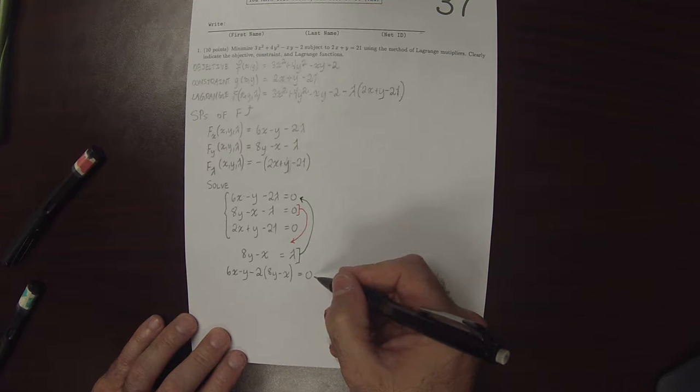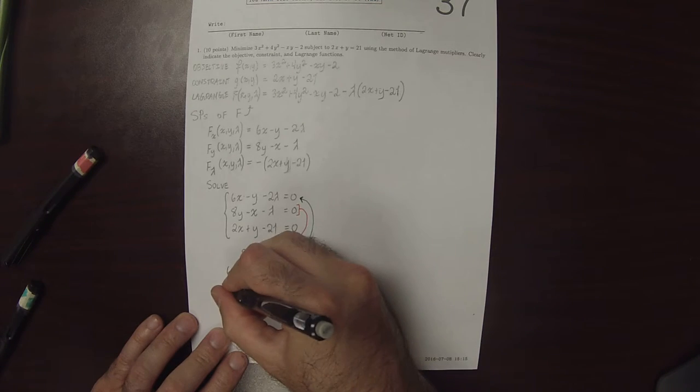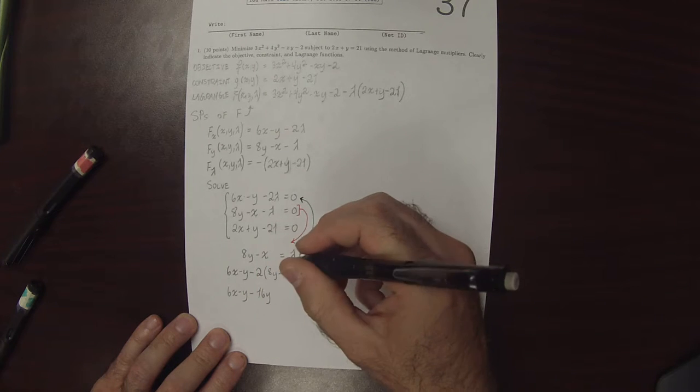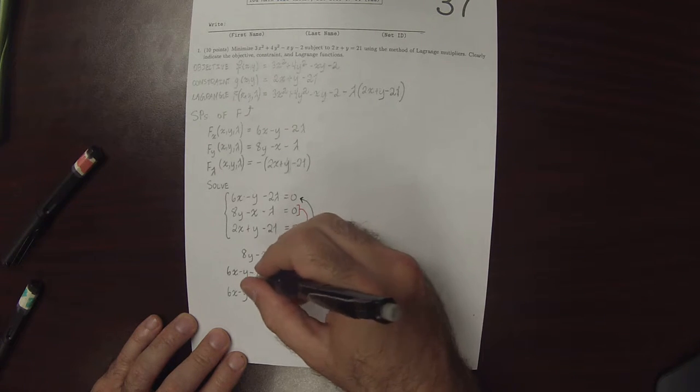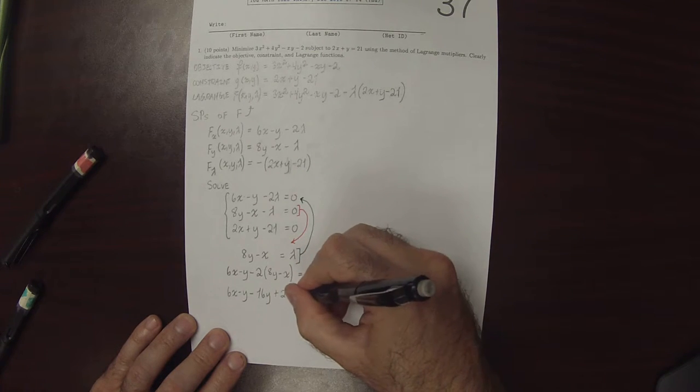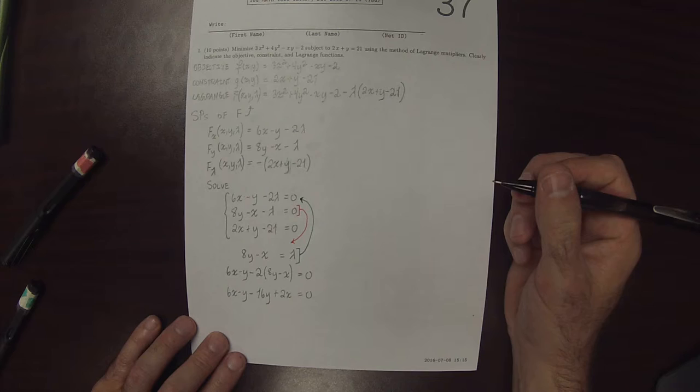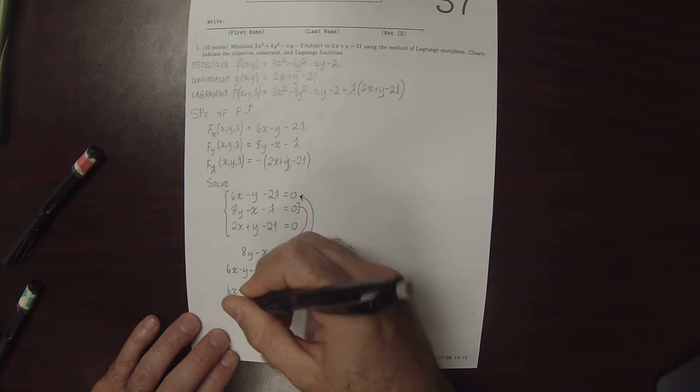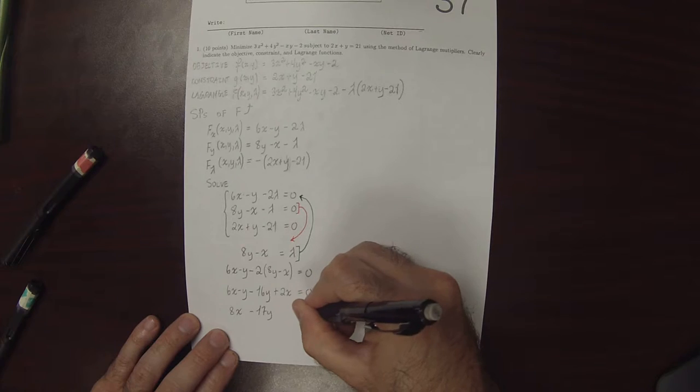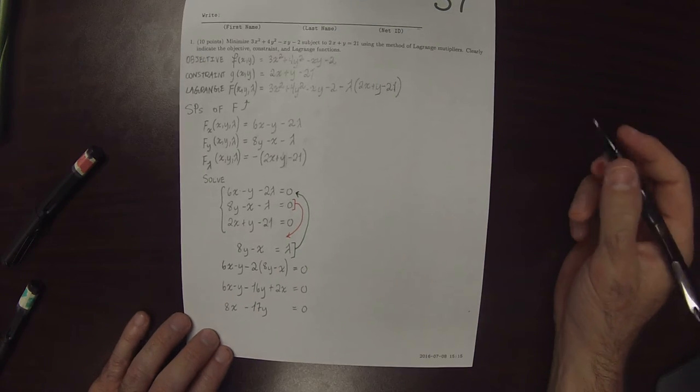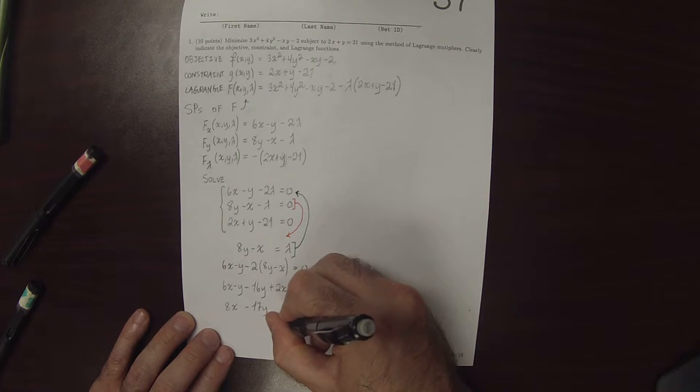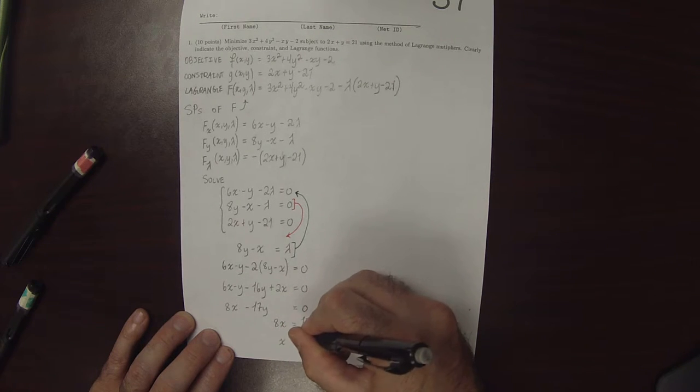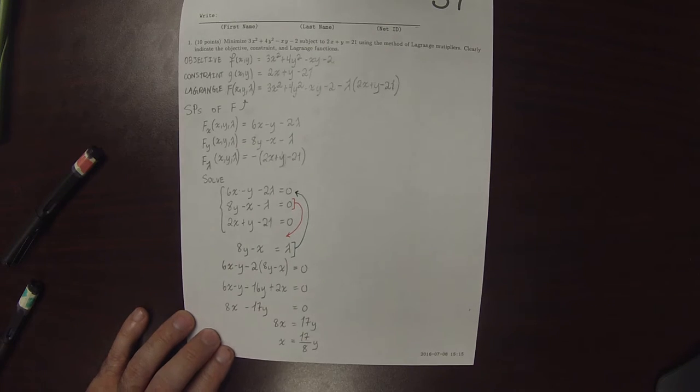Notice that in this equation we've now eliminated lambda. So that would be 6x minus y minus 16y, and then plus 2x is equal to 0. So then that would say 8x minus 17y is 0. So 8x is 17y, so x is 17 over 8y. It's kind of a weird number.